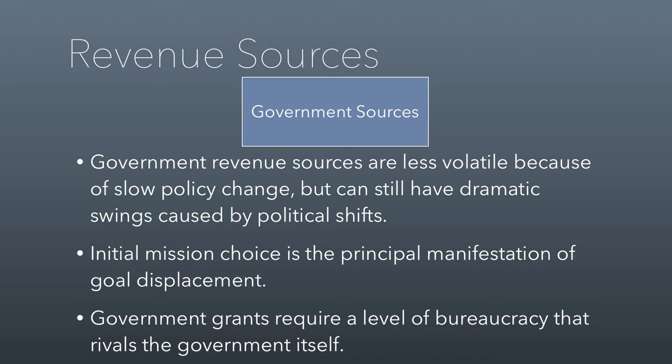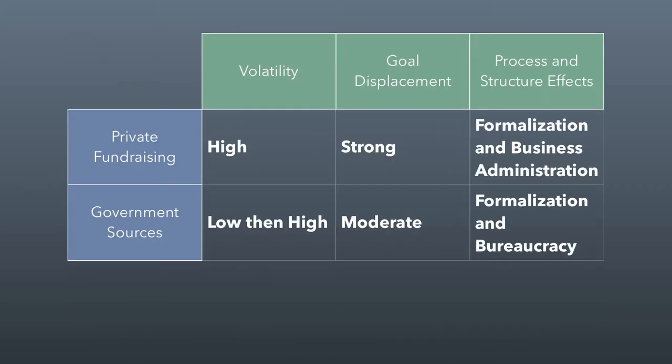Although there's not a lot of goal displacement from government sources, there is a lot of initial goal displacement, meaning that a lot of nonprofits get started because government funding has been authorized for some activity. So it's not so much that you change what you do because the government wants you to behave differently — it's more that you start something new because all of a sudden the government is paying for it. Government grants require a level of bureaucracy that rivals the government itself. Quite frankly, a lot of nonprofits will actually pass on government funds because the grant requirements are so onerous it's not worth their time. Volatility is low for long periods and then briefly high. Goal displacement is moderate — mostly initial, like initial mission choice — and there's a lot of formalization and bureaucracy that comes with seeking government grants.